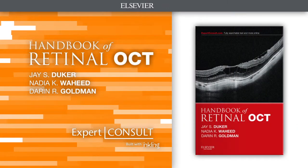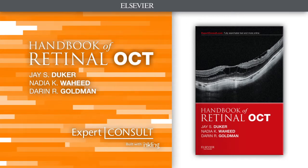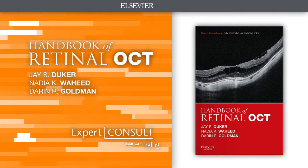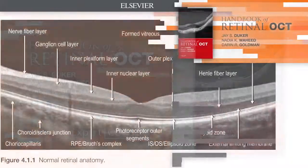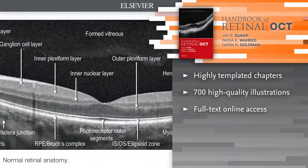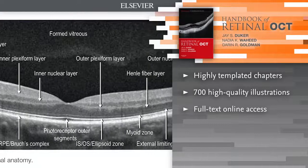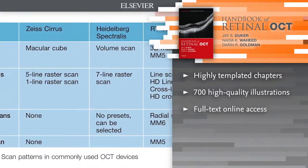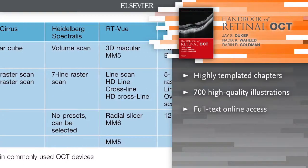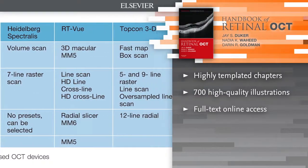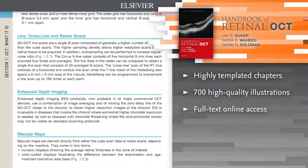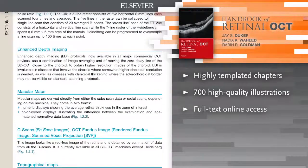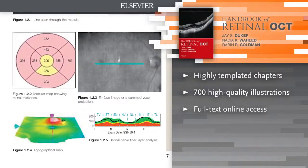Handbook of Retinal OCT: Optical Coherence Tomography. With the Handbook of Retinal OCT, you can master the latest imaging methods used to evaluate retinal disease, uveitis, and optic nerve disorders. Locate answers quickly with templated chapters, each focused on one specific diagnosis or group of diagnoses with a particular OCT appearance.